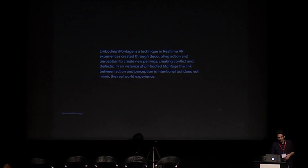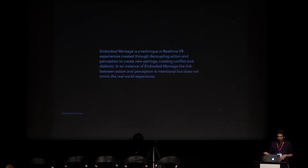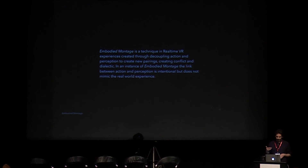The definition is: embodied montage is a technique in real-time VR experiences created through decoupling action and perception to create new pairings, creating conflict and dialectic. In an instance of embodied montage, the link between action and perception is intentional but does not mimic the real world experience. In a virtual reality headset you can separate one eye from the other, separate height from the body, separate field of vision from sight, and separate movement from vision. Such separations allow artists to make novel combinations between characteristics and actions of embodiment and their consequences.